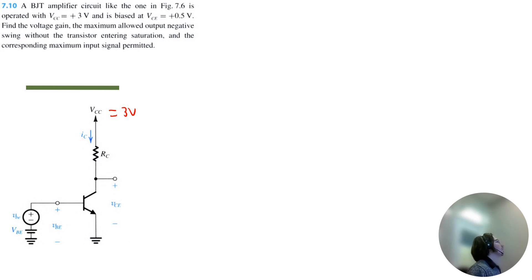First thing we want to find is the voltage gain. For a BJT amplifier like this, a good equation would be negative VCC minus VCE divided by VT.